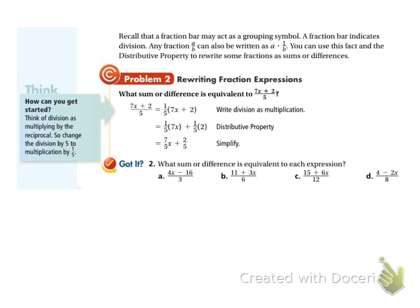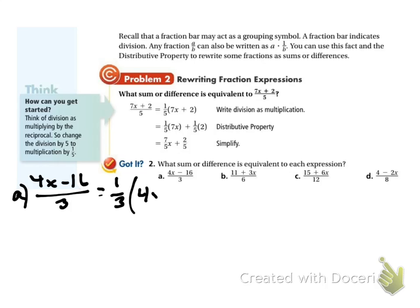We can also undistribute, in a way, by taking apart fractions. If a fraction is over 5, I can pull that 1/5 out because I'm just multiplying, and then distribute the 1/5 back in. So for example, I've got (4x minus 16) over 3. I'm going to pull that 1/3 outside and leave 4x minus 16 inside.